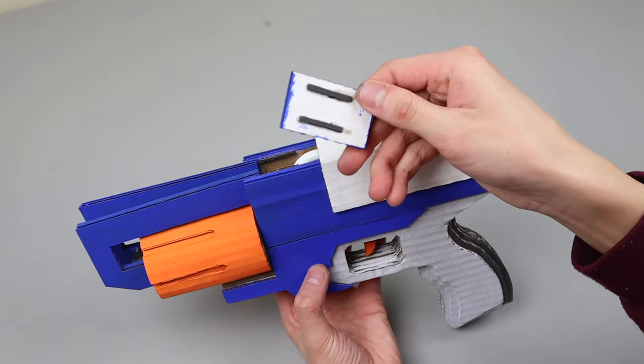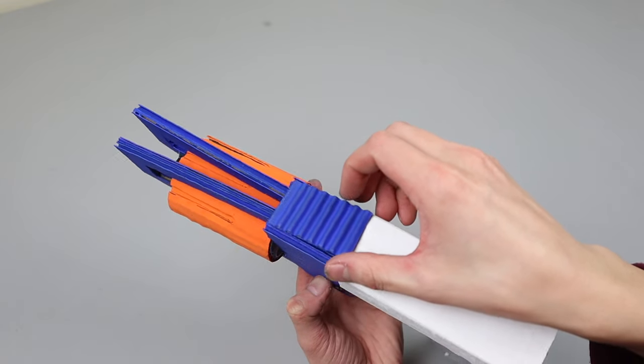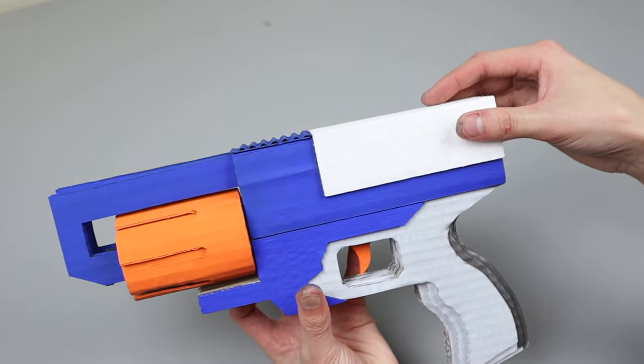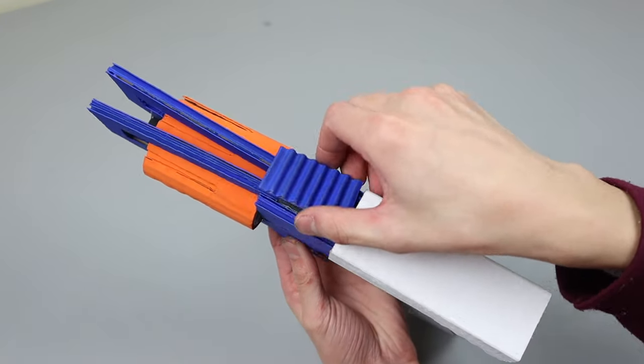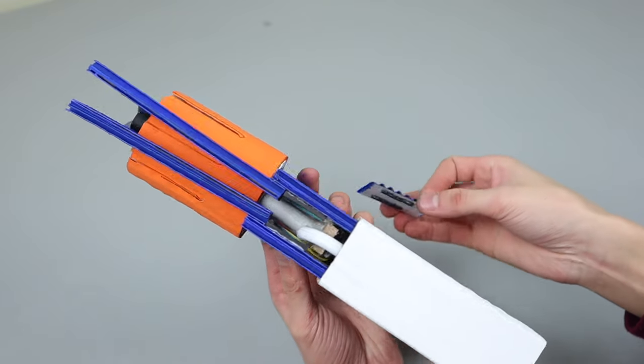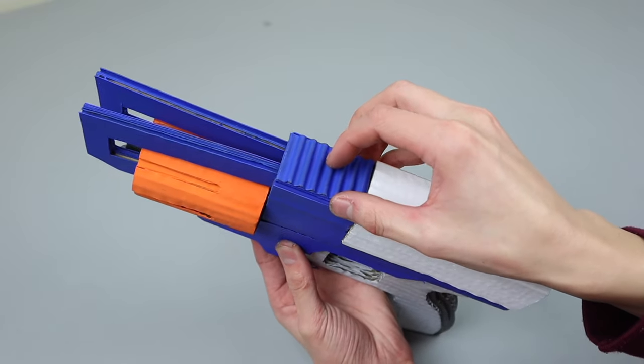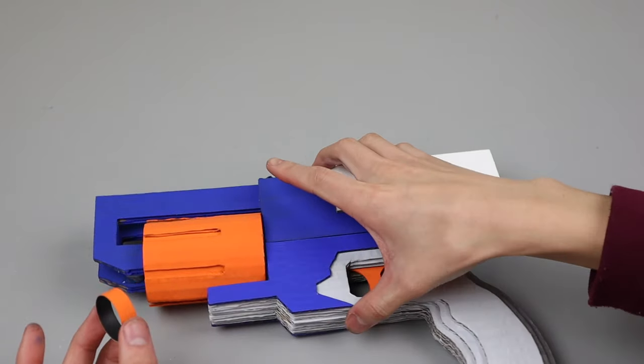Once all of the moving parts and complicated stuff was out of the way, I just had to work on the aesthetics. For this piece here, I used some magnets to make it removable just in case I need to access the inside and change some of the rubber bands. Other than that, I just had to make it look nice and that was about it.